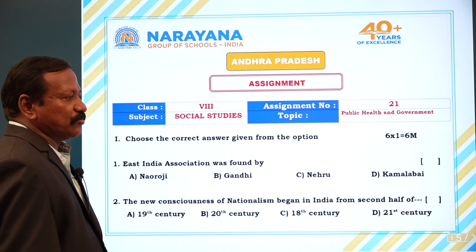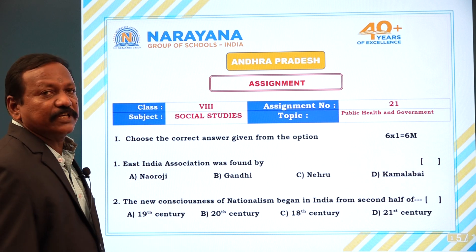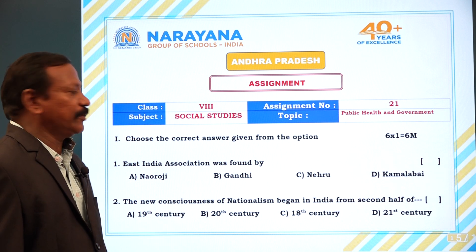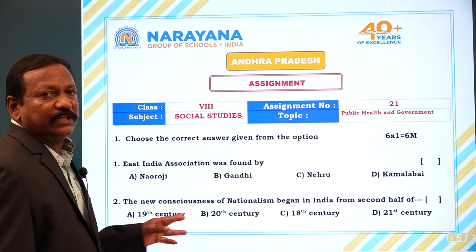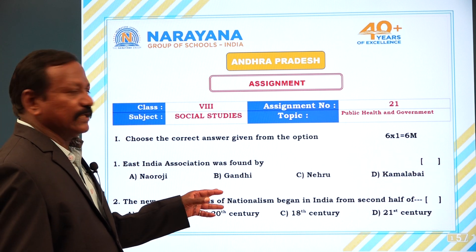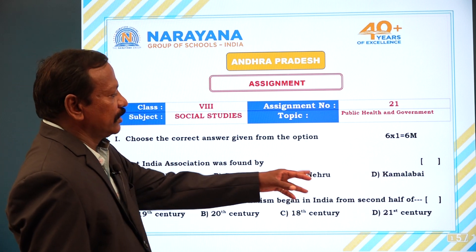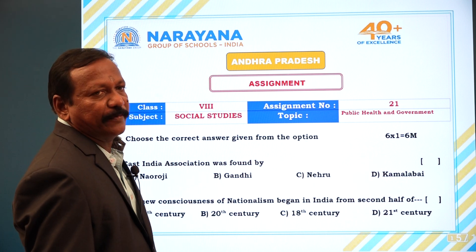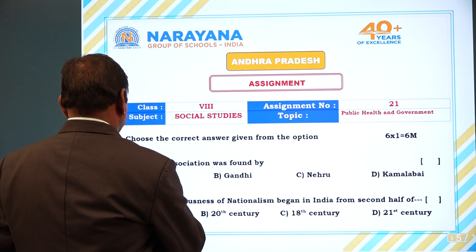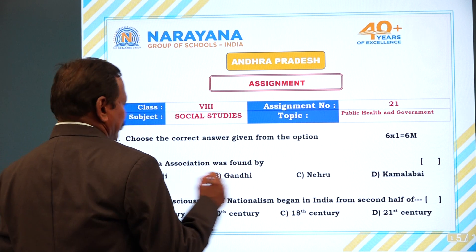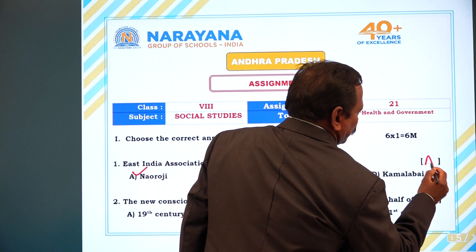First question: East India Association was founded by A. Naoroji, B. Gandhi, C. Dukuru, D. Kamalabai. Answer is A. Naoroji.